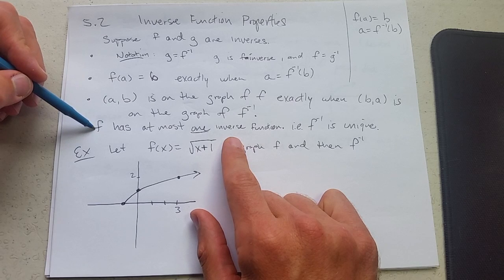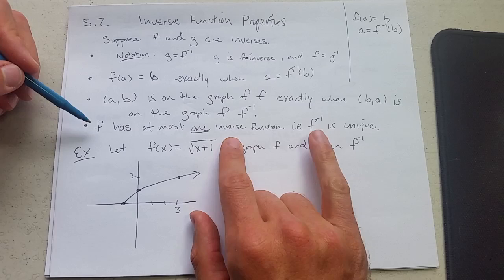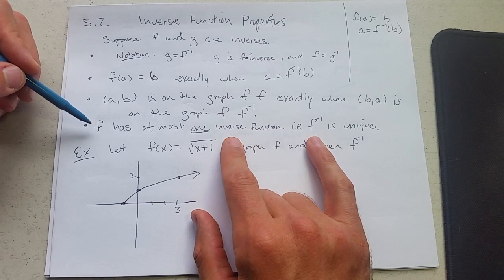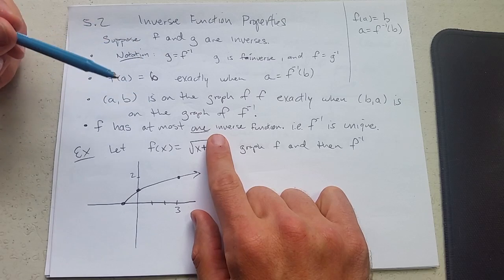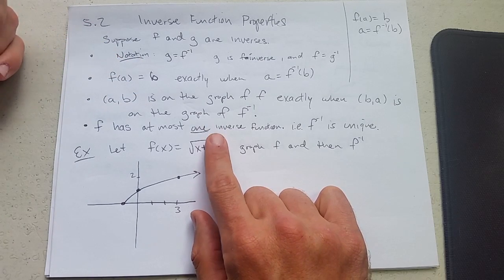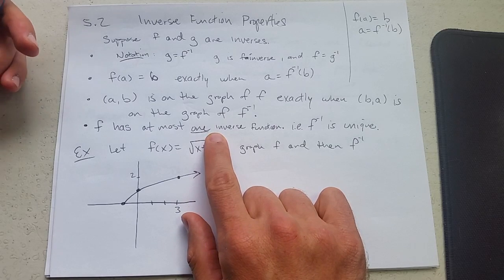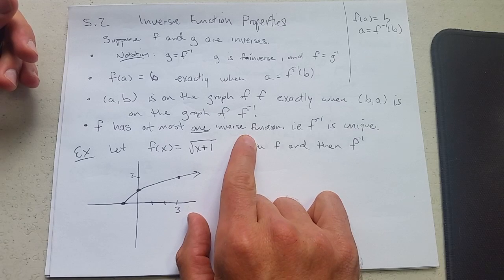And if a function is invertible, it has a single inverse. Another way to say that is f inverse is unique. So we say at most one inverse function, you cannot have two. You can either have one inverse function if you're invertible. If you're not invertible, you have zero inverse functions or you do not have an inverse.